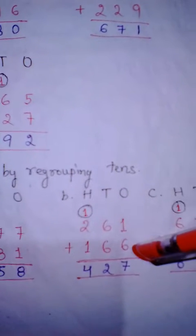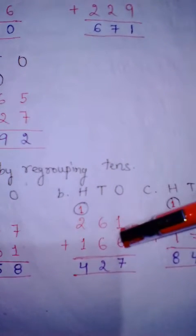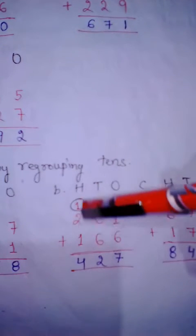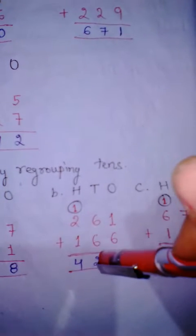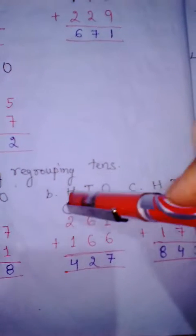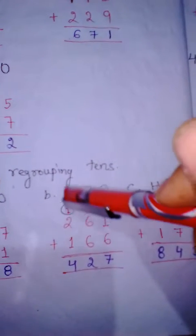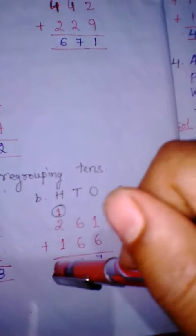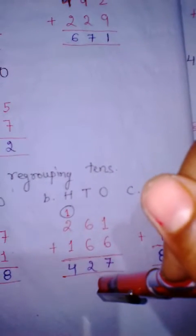Now part B: 1 plus 6 is 7. Then 6 plus 6 is 12, so we write 2 and carry 1 to the hundreds place. In the hundreds place, 2 plus 1 is 3, and carry 1 makes 4. So our answer is 427.